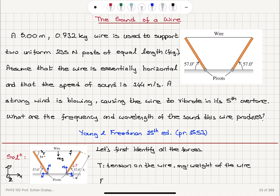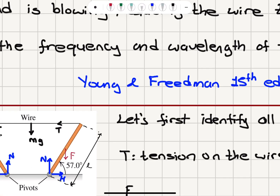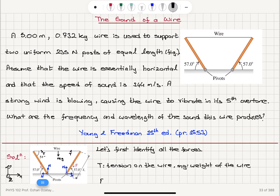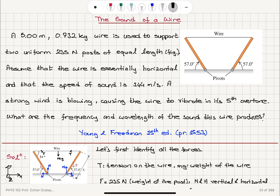F is the weight of the uniform post, pointing down from its center of mass. F equals 235 newtons — that is the weight of the post. There will also be contact forces: a normal force N and horizontal force H, which are the vertical and horizontal components of the contact force at the pivot points where the posts touch the ground.